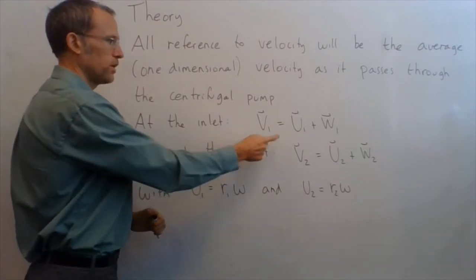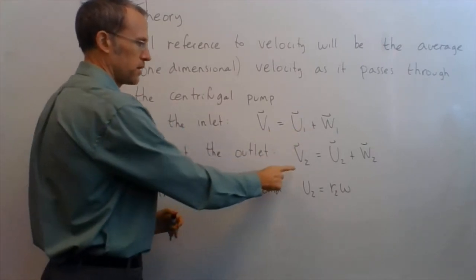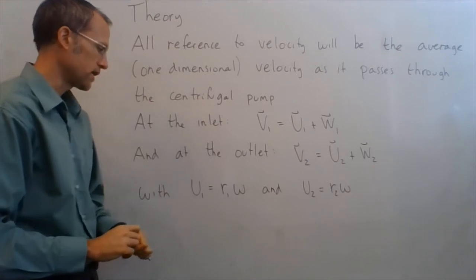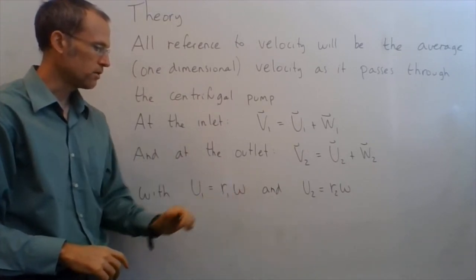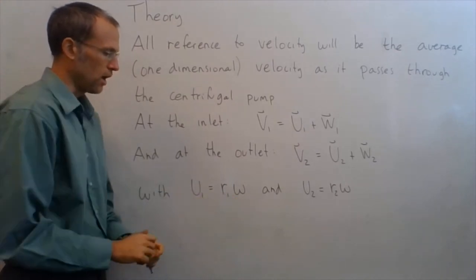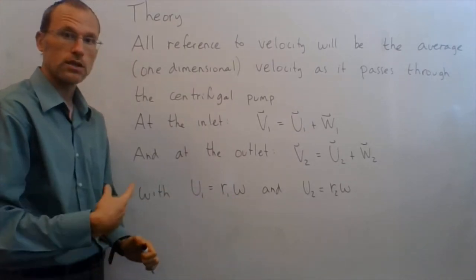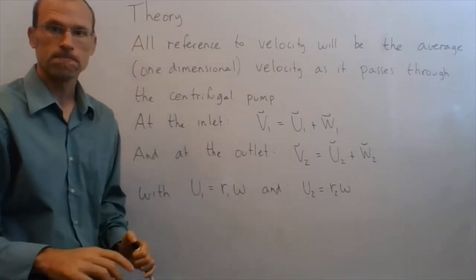So inlet V1 equals U1 plus W1 is the vector. At the outlet, V2 is U2 plus W2 again as vectors, and then my blade velocities, U1 and U2, are just the radial coordinate of that blade times the angular velocity of the impeller. So U1 is R1 omega, U2 is R2 times omega.